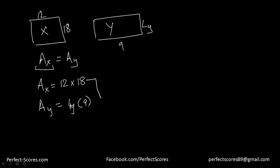And as we know that these both are equal, so the area of x is equal to area of y. From here I can say that 12 into 18 is actually equal to the length of y into 9. So you can cut this off easily by 2. That means length of y is equal to 24, which is nothing but our answer option E.